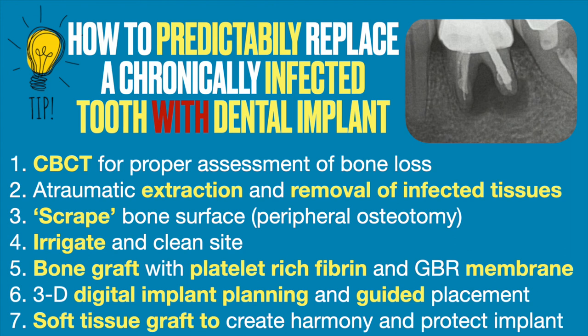My tips on how to predictably replace a chronically infected tooth with dental implant therapy: First, use a cone beam CT scan for proper assessment of the bone loss. Second, perform an atraumatic extraction and thorough removal of infected tissue to ensure the site is clean. Third, scrape the bone surface to remove any necrotic bone — the procedure known as peripheral osteotomy or ostectomy. Fourth, irrigate and clean the site to make sure all inflammatory tissues have been addressed. Fifth, graft the area using platelet-rich fibrin and guided bone regeneration membrane, using the bone graft complex discussed earlier.